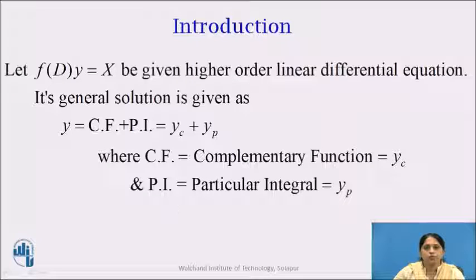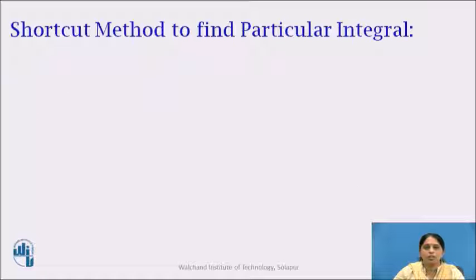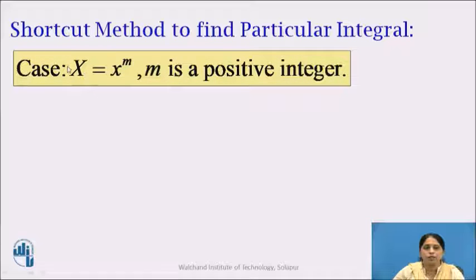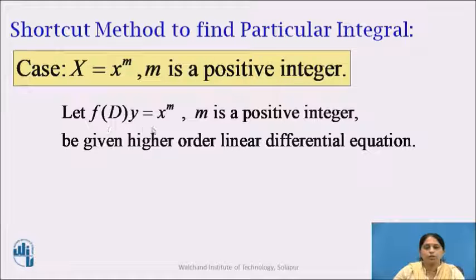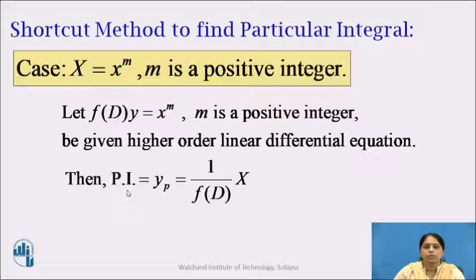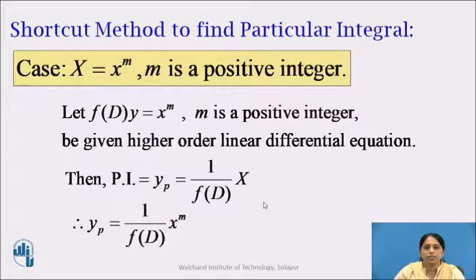In this video we are going to see the shortcut method to find the particular integral for the case of capital X, that is the right-hand side of the equation, as x raised to m, where m is a positive integer. Then the particular integral PI or yp equals 1 upon f(D) into x raised to m.